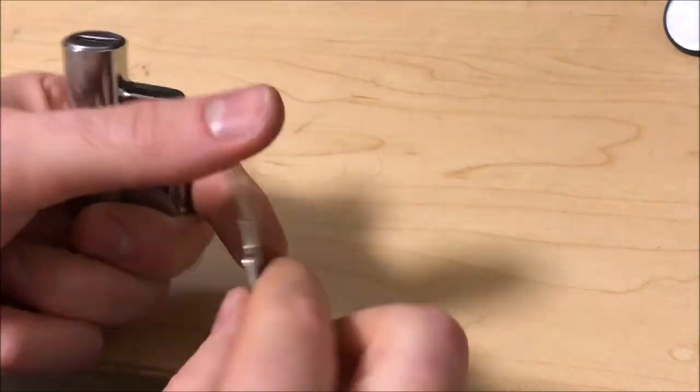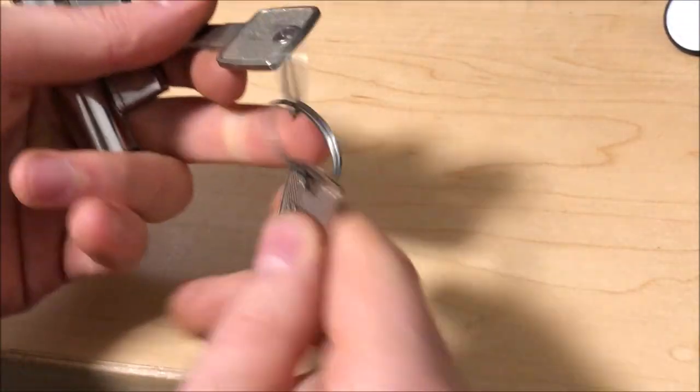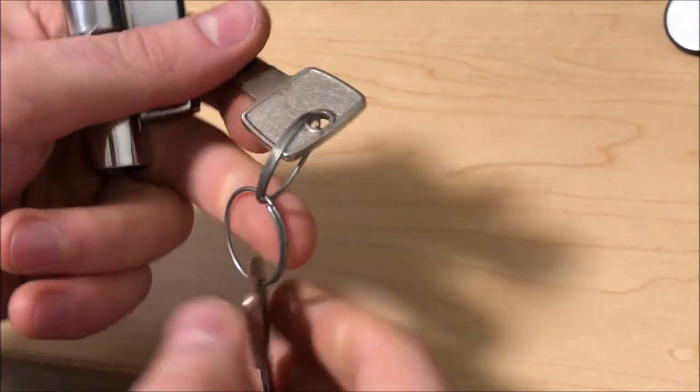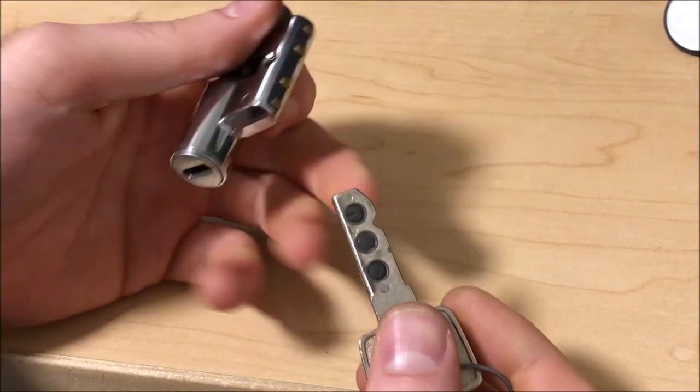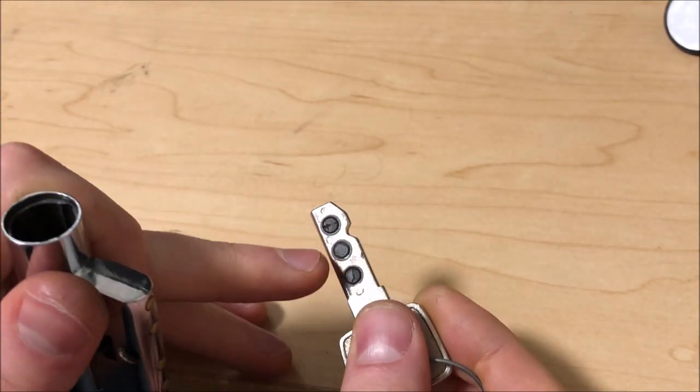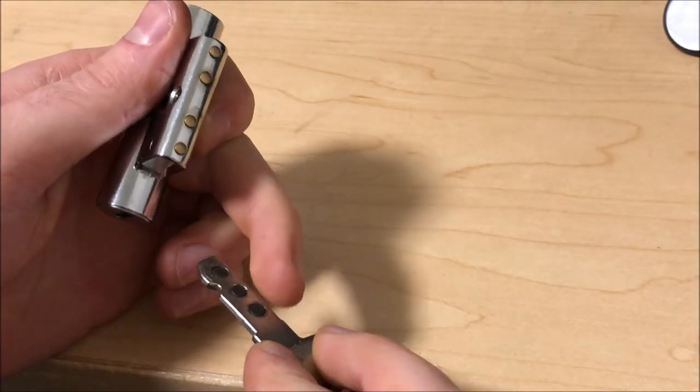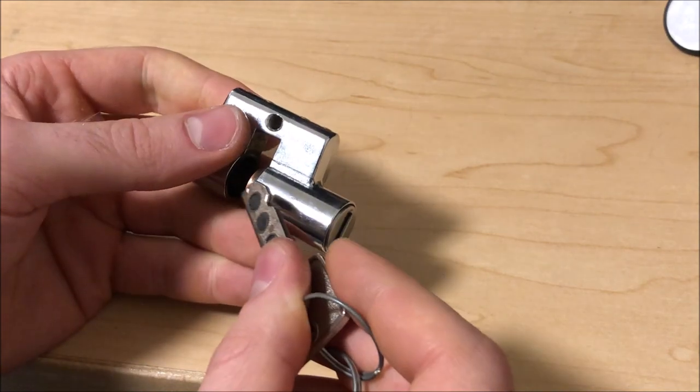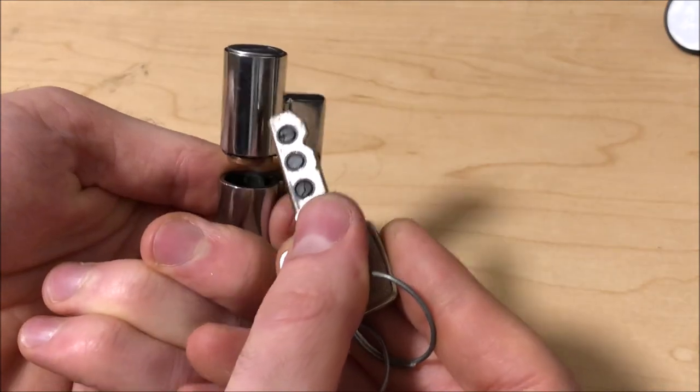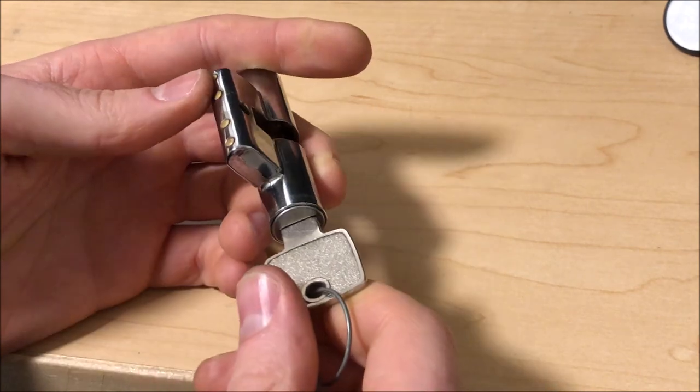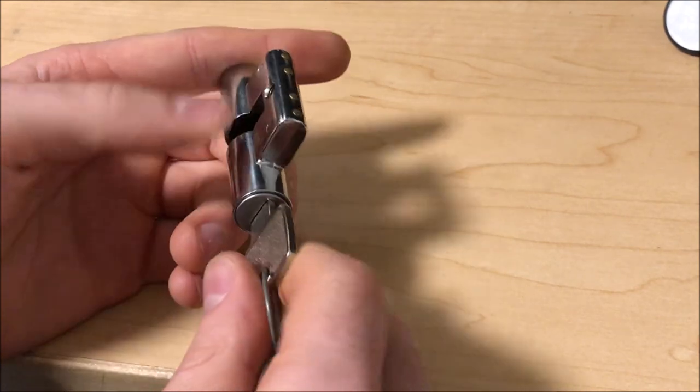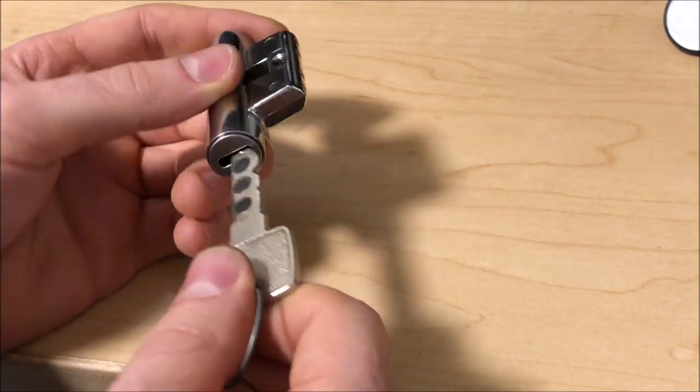This is an LZT magnetic rotor lock, that's hard to say, which operates by having three magnets on each side of the key which align rotors in both sides of the lock to the proper orientation so that sidebars on both sides are allowed to recede and let the lock open.